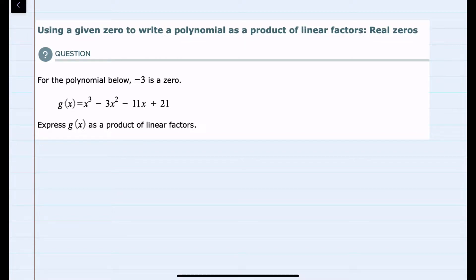We're given the polynomial here, g(x), and we're asked to express it as a product of linear factors, and also told that negative 3 is a zero. So I'll start with the negative 3 is a zero. That means that x minus a negative 3, or x plus 3, must be one of the factors of the polynomial.